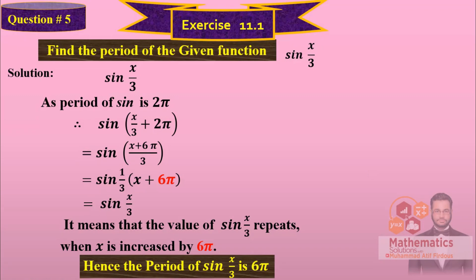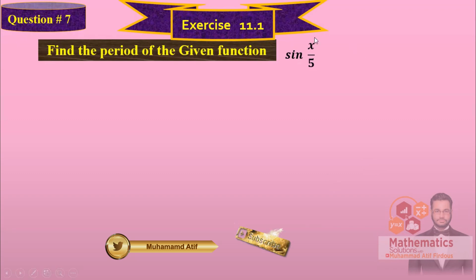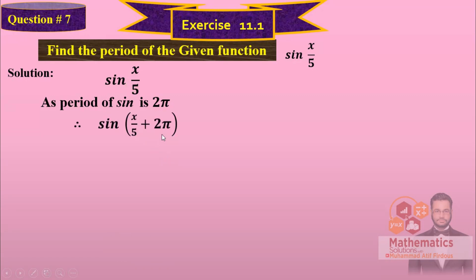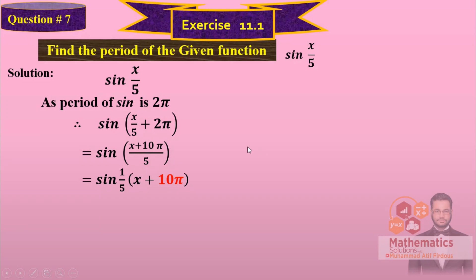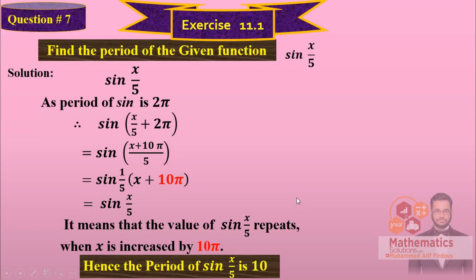So that is the pattern for fractions — you can also take LCM to bring out the denominator. Now the remaining questions follow the same pattern. Question number 7, which was homework for both classes: sin(x/5) — very similar. The period of sine is 2 pi. Adding 2 pi in x/5: take LCM of 5, so 5 times 2pi gives 10 pi. Hence the period of sin(x/5) is 10 pi.